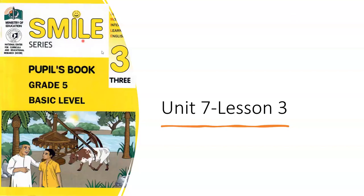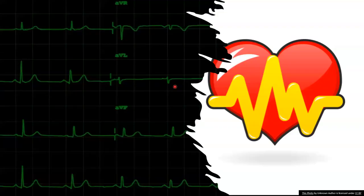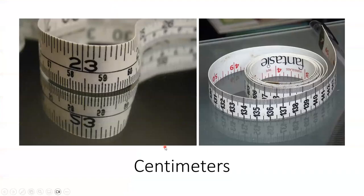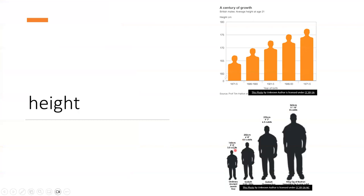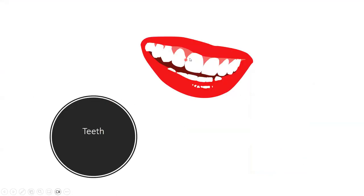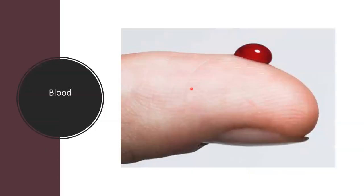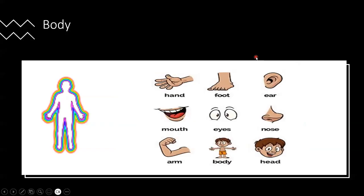Hello, my lovely kids. Smile. Unit 7, Lesson 2, Lesson 3 new words. Beats — our heart beat, the beat of the heart. Centimeters. Height — the height of this man is 160 centimeters. Second — this is an hour, this is for the minute, and this is for the second. Teeth, waist, blood. This is our body: hands, foot, ear, mouth, eye, nose, arm, and body.